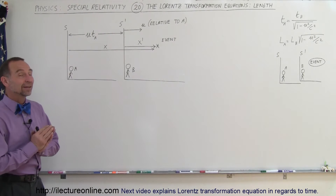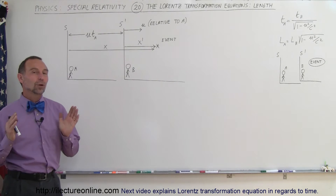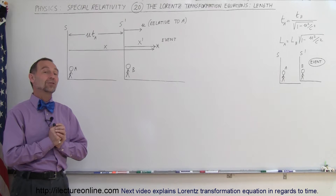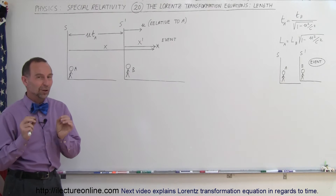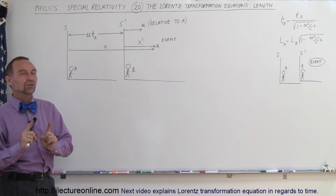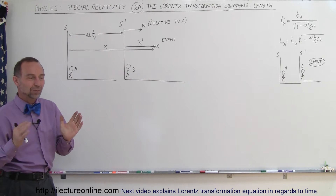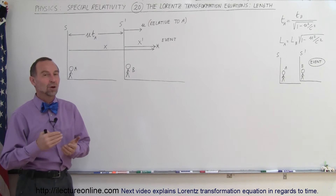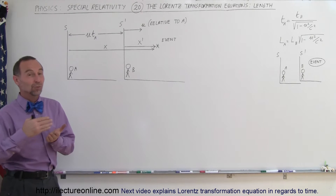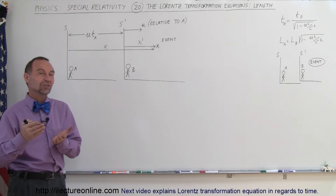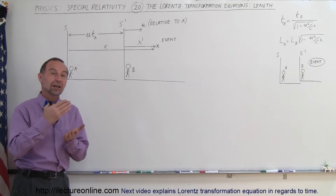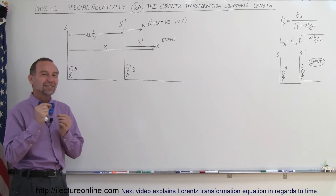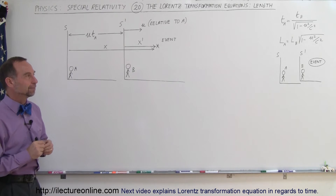Welcome to ElectronLine. Now let's take a look at the Lorentz transformation equations. The Lorentz transformation equations are used in cases where we have relativistic velocities — when the velocity of one reference frame is moving much faster than another, with velocities near the speed of light.